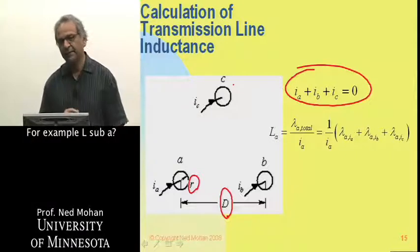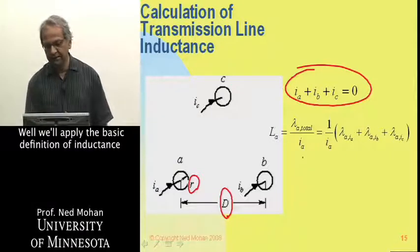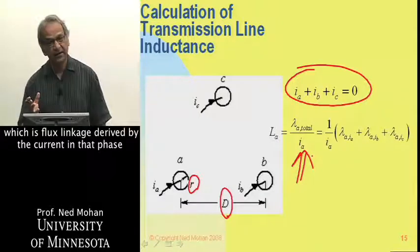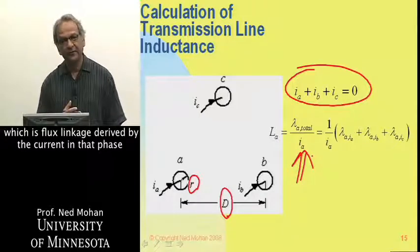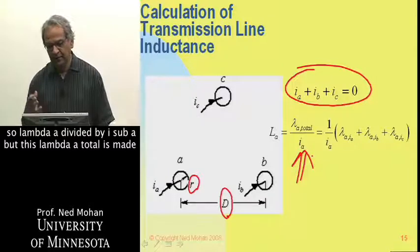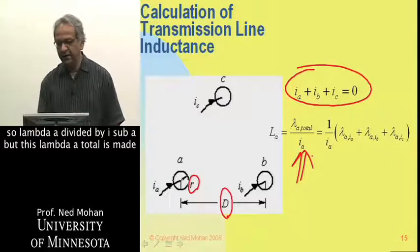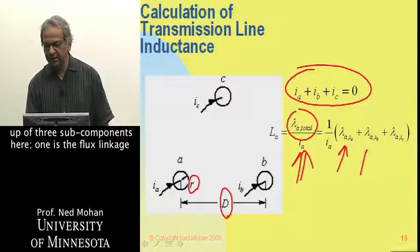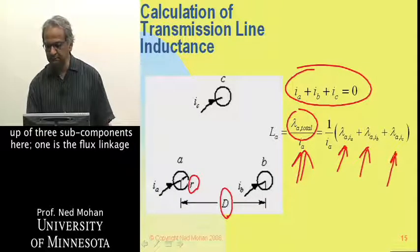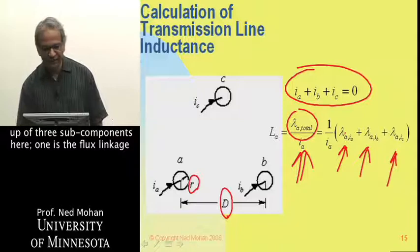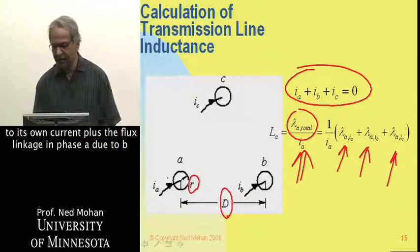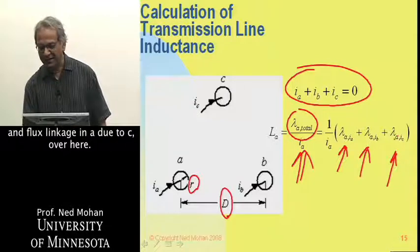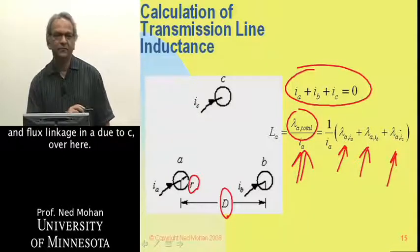So how do we calculate the per-phase inductance of this transmission line? For example, L sub a. We'll apply the basic definition of inductance, which is flux linkage divided by the current in that phase. So lambda a divided by I sub a. But this lambda a total is made up of three subcomponents here. One is the flux linkage due to its own current, plus the flux linkage in phase a due to b, and flux linkage at a due to c over here.